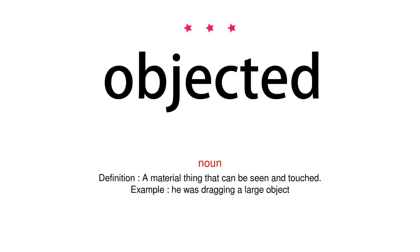Object. Noun. A material thing that can be seen and touched. Example: he was dragging a large object.